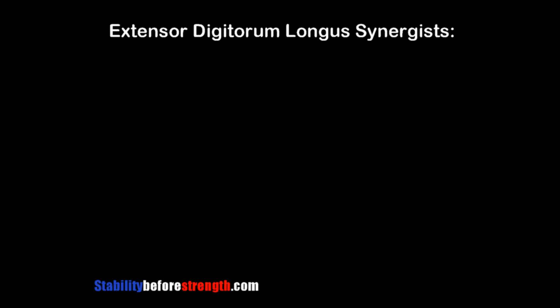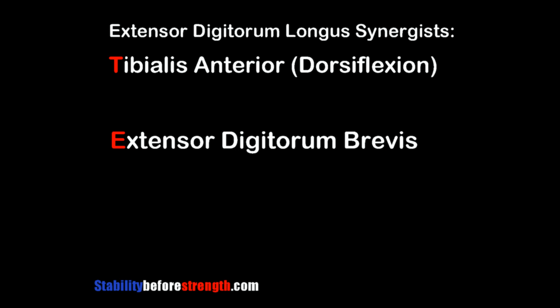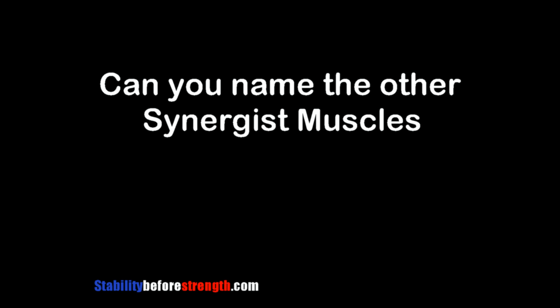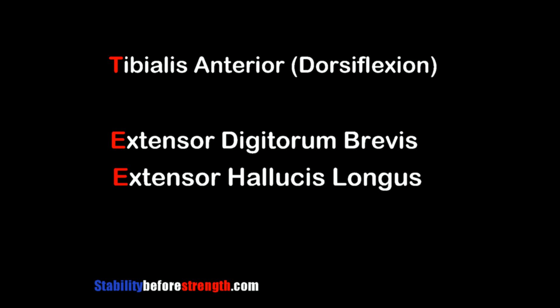Now that we know the actions, let's go over the muscles that assist the extensor digitorum longus. Synergists include the tibialis anterior for dorsiflexion, and the extensor digitorum brevis and extensor hallucis longus for extension of the toes. The muscles that assist eversion of the foot are not included since that's not the main purpose. What are the synergist muscles? The tibialis anterior, extensor digitorum brevis, and extensor hallucis longus.